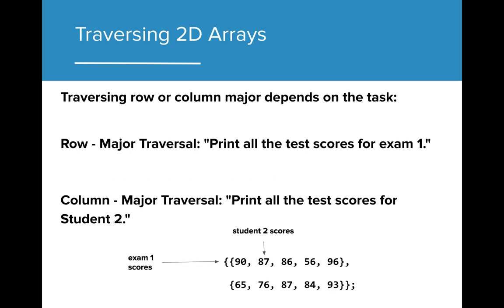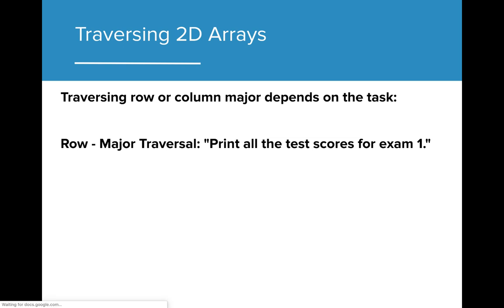Traversing using row or column order can depend on the task that is being completed. For example, if we wanted to print all the test scores for exam 1, it would make more sense to do a row traversal to get all the values for the first exam. And if we wanted to print all the test scores for an individual student, it would make more sense to use column major traversal to access that student's data across all exams.